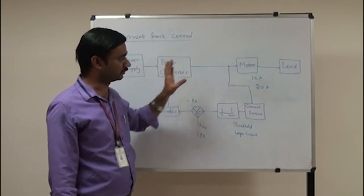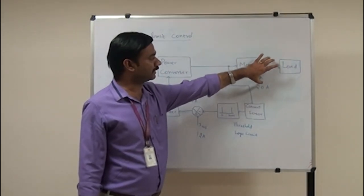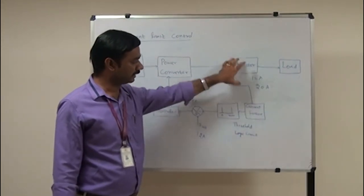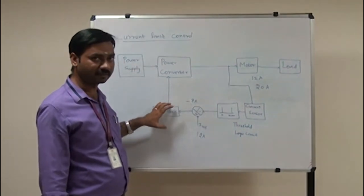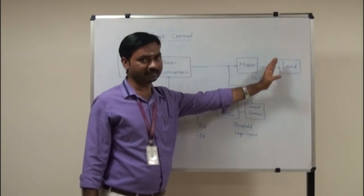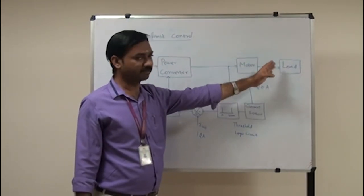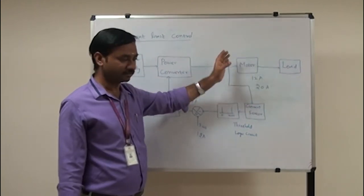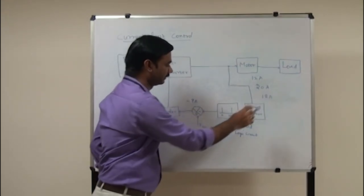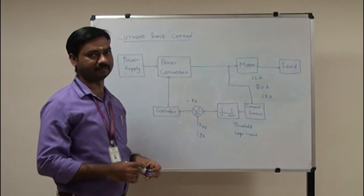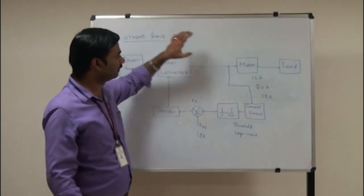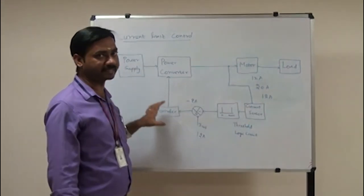This is the main purpose of the closed loop current limit control system — protection. When the motor is at risk of damage, the current sensor and comparator trigger the controller to turn off the power converter switches. Once the fault is cleared, the current returns to 12 amps and the motor resumes normal operation. This is how current limit control works: sense the current and maintain it at or below the maximum rated level.